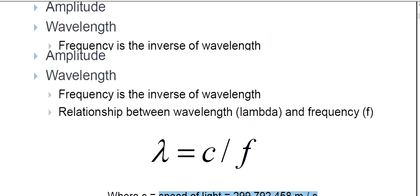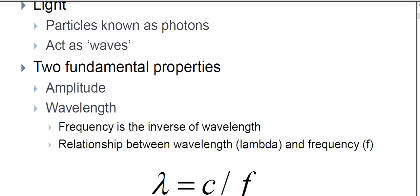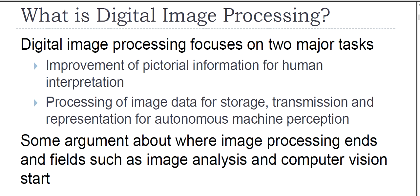So photons are the particles of light, they act as waves, and two fundamental properties are amplitude and wavelength. Frequency is the inverse of wavelength. Now coming to digital image processing — why have we mentioned light? Because these are the basic terms related to our vision. You cannot imagine vision in a dark room, so light is very much important for human vision. Now, what is digital image processing?